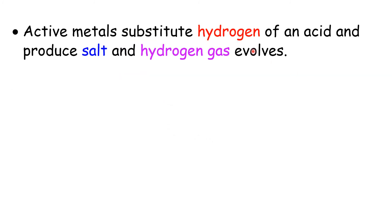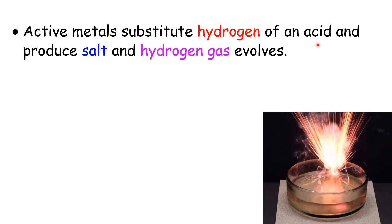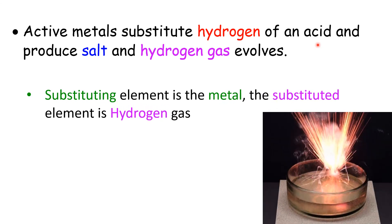Active metals substitute hydrogen of an acid and produce salt and hydrogen gas evolves. The substituting element is the metal, and the substituted element is the hydrogen gas.